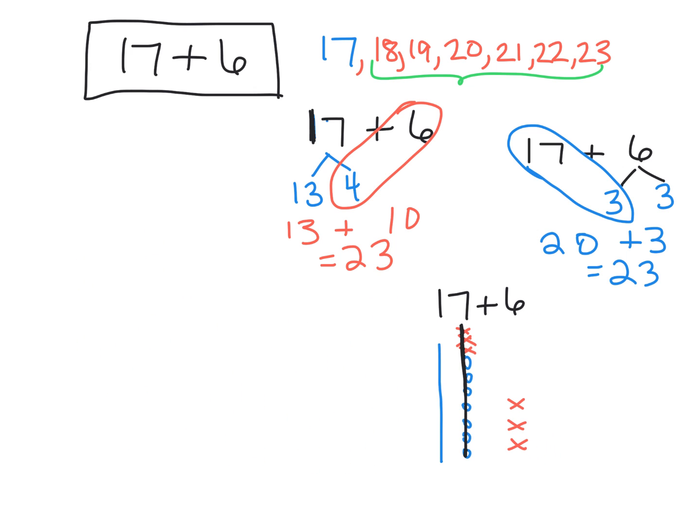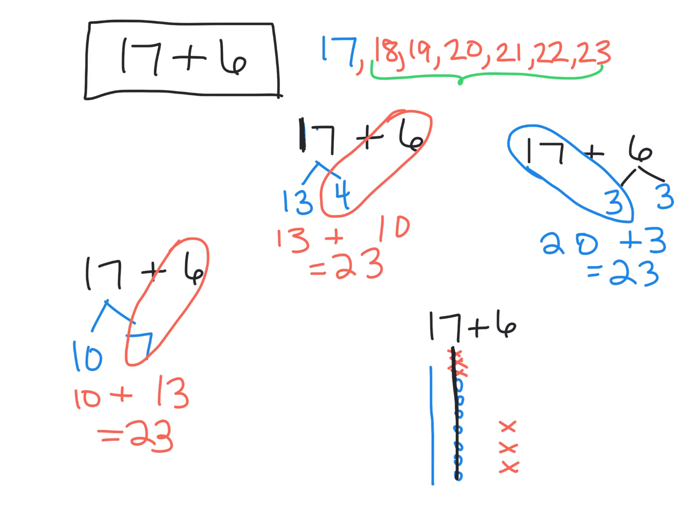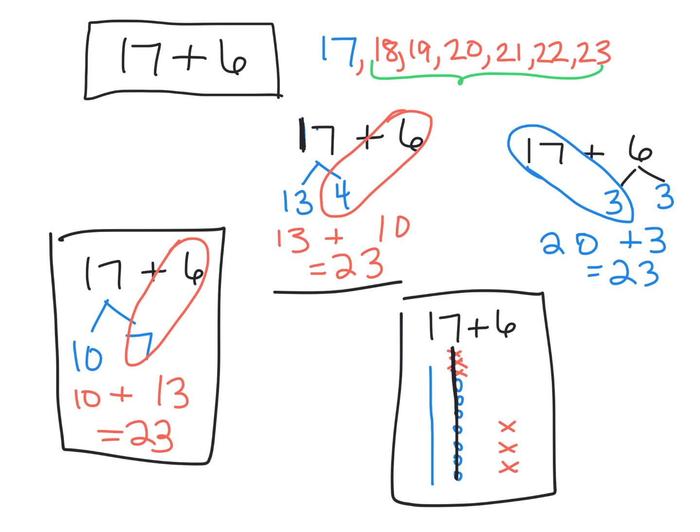That's another method using the quick 10. We could just go on and on. Another one: the classic 17 plus 6, decompose 17, you get 10 and 7. Now we can add 6 and 7, that gives us 13 plus the 10 in the front gives us 23. So we have yet another technique. The beauty of this is students get to start to appreciate other techniques that perhaps they themselves did not think of.